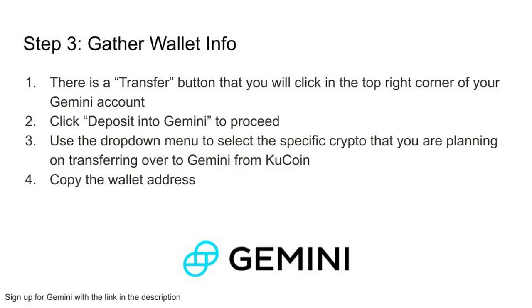After your account is verified, it's time to gather information about your wallet. Since you are sending the crypto to Gemini, you need your Gemini wallet address. Each cryptocurrency has its own unique wallet address within a platform, so it is crucial that you locate the correct address. For example, if you want to send Bitcoin, then you must copy the Bitcoin address. You can locate your Gemini wallet address by following the instructions on screen. Once you have located the desired cryptocurrency and corresponding wallet address, you will copy it and paste it into the KuCoin platform.